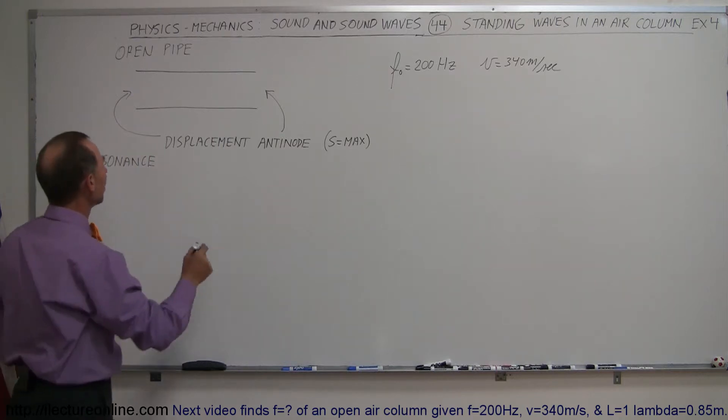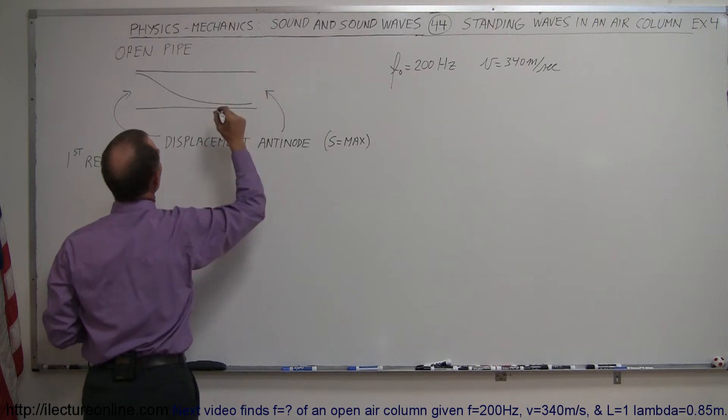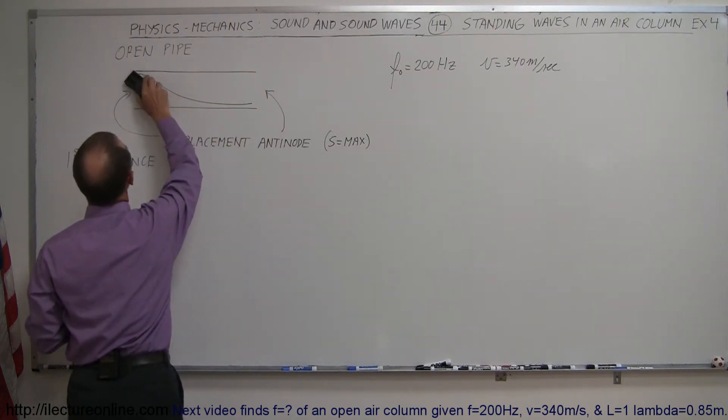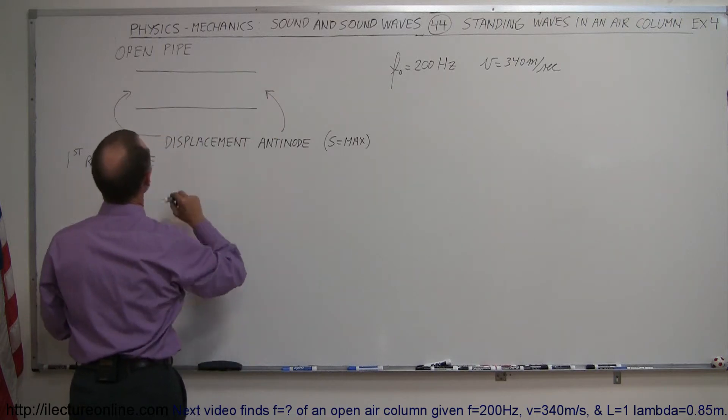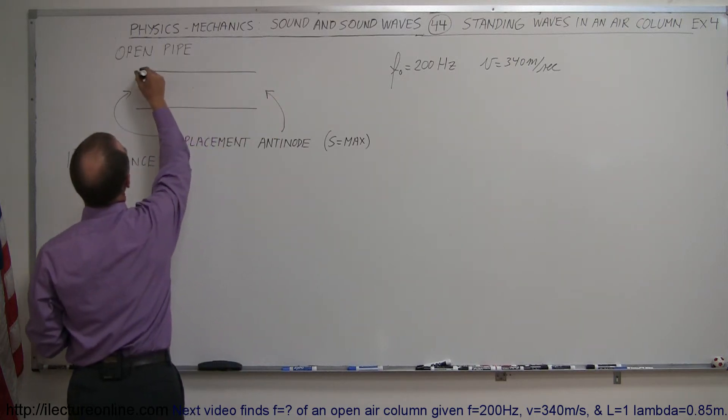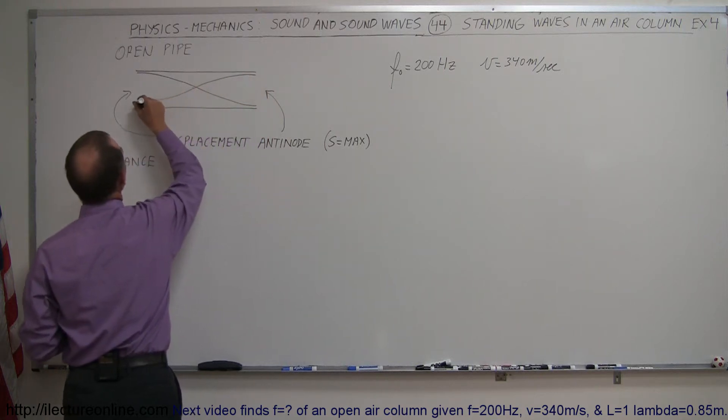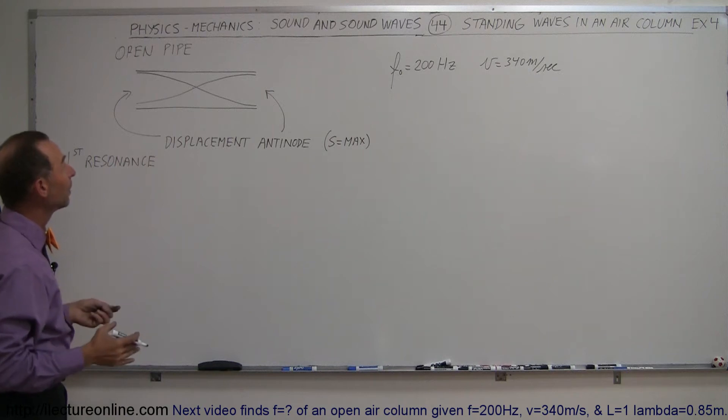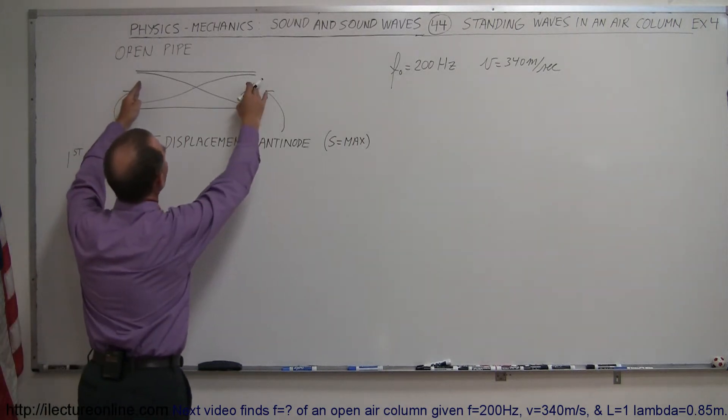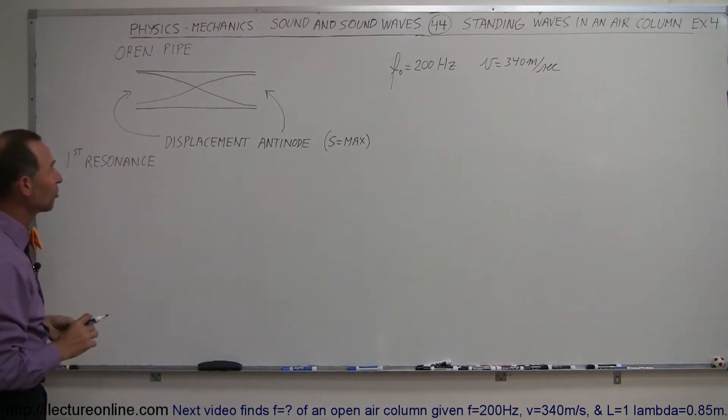The best way to illustrate that would be to show it like this. So we'll have a node in the middle, and we make it look like that. This would be the first resonance situation in an open pipe. If there's an antinode here and an antinode there, you have to have at least one node in the middle. That's the simplest situation.